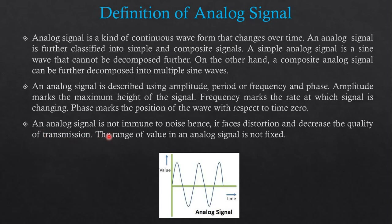An Analog Signal is not immune to Noise; hence it faces distortion and decreases the Quality of Transmission, because several types of Noise occur in Analog Signal. The Range of Values in Analog Signal is not fixed — we can change the Frequency or the Range of Frequency. The best example of Analog Signal is Human Voice.